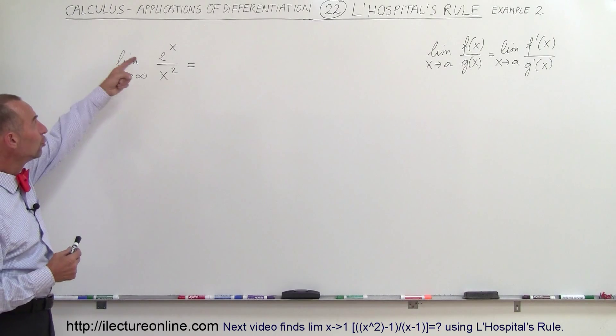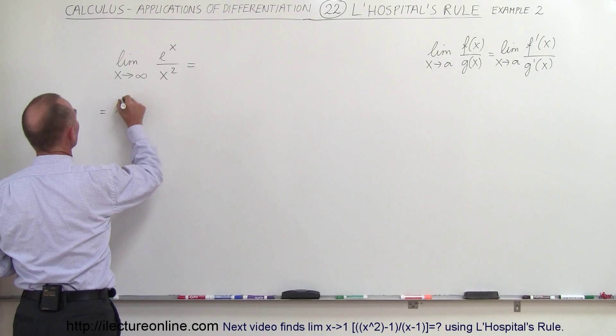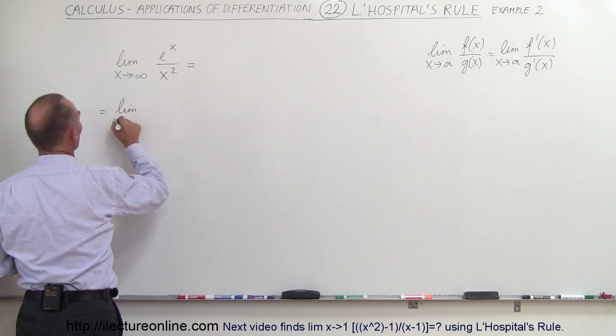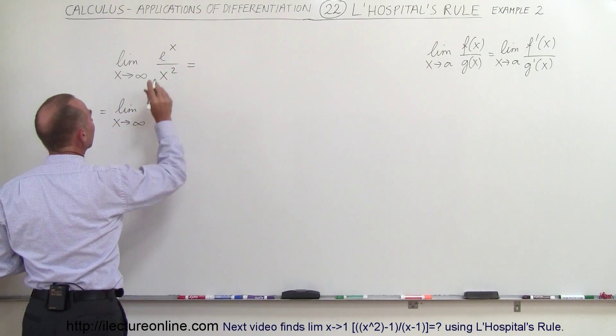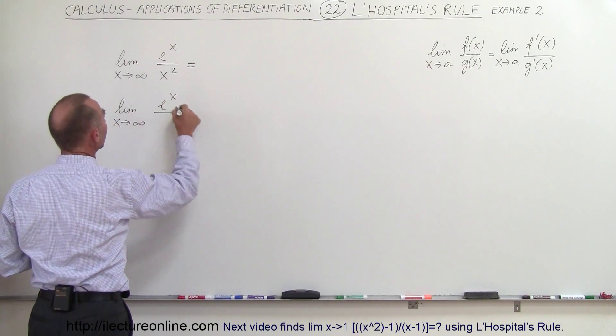Let's take the derivative of the numerator and the denominator and see what we can get. So we say this is equal to the limit as x goes to infinity, e to the x of course the derivative of that is e to the x